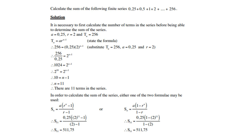At this stage we either use logs or exponential laws: 1024 = 2¹⁰, so the exponents are equal, giving 10 = n - 1, therefore n = 11. We can use either of the two formulas — let's use both to show the answers are the same. After substitution and using a calculator, the answer is 511,75.